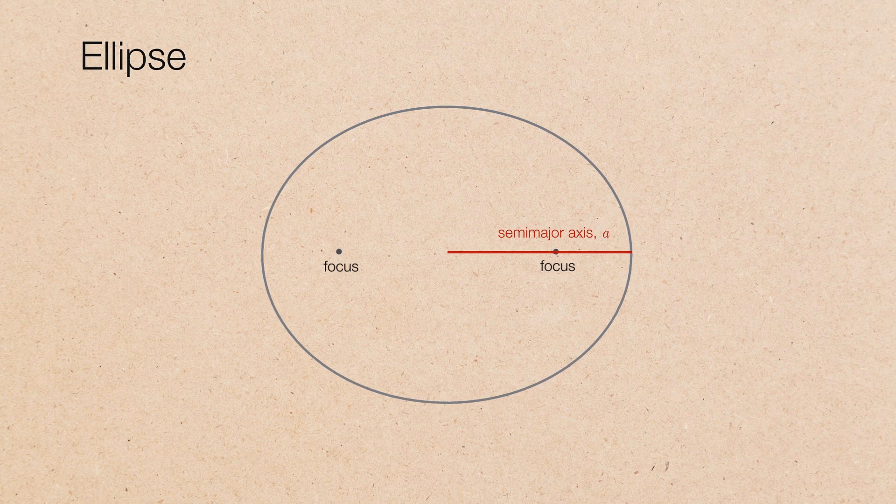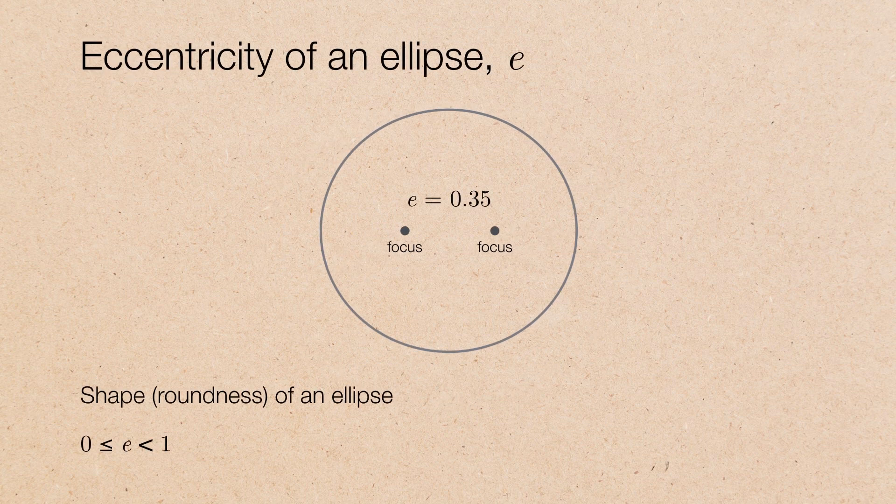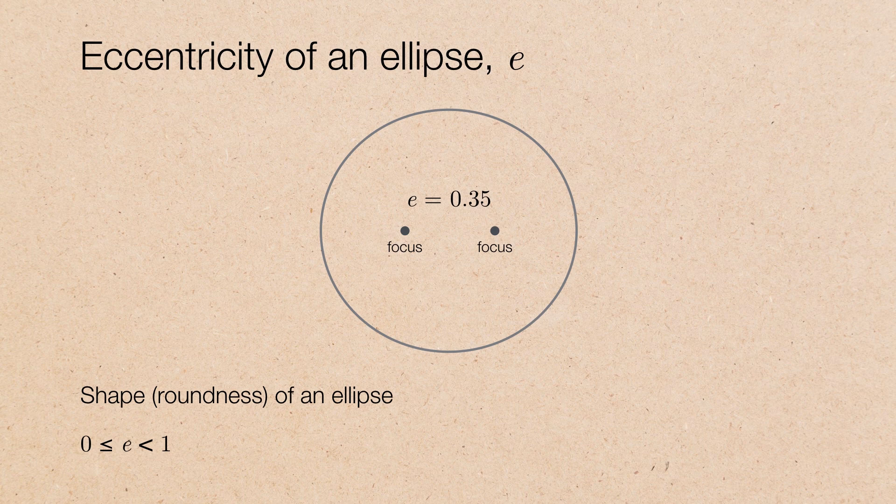Now, there's another property of an ellipse called the eccentricity. The eccentricity is a measure of an ellipse's shape. So, for example, this particular ellipse has an eccentricity of 0.35. The value of the eccentricity is always going to be at least 0 and less than 1.